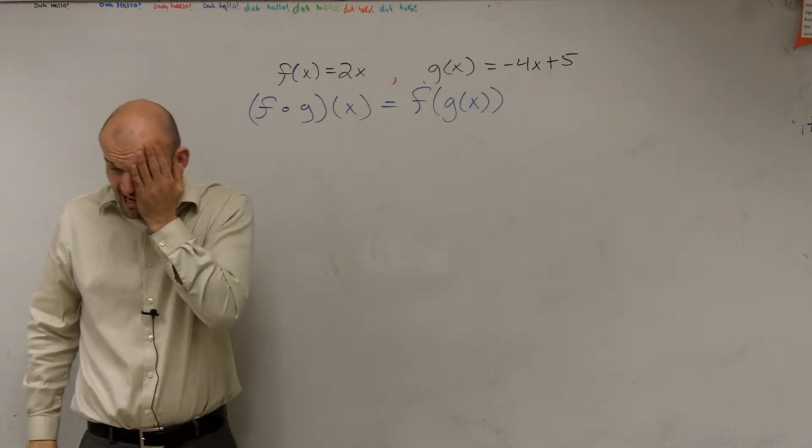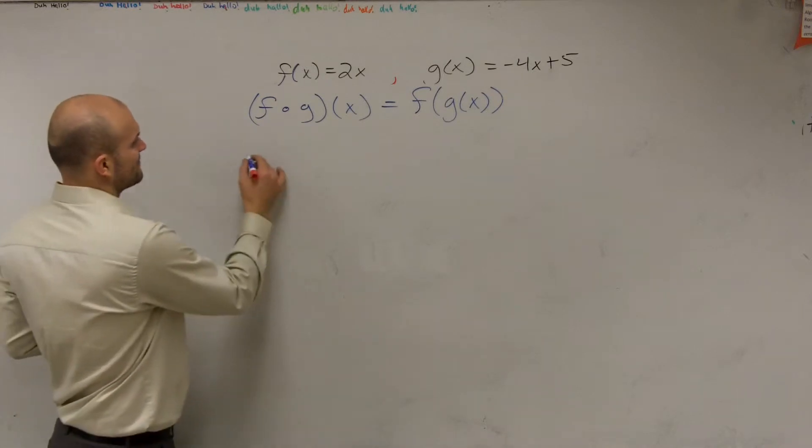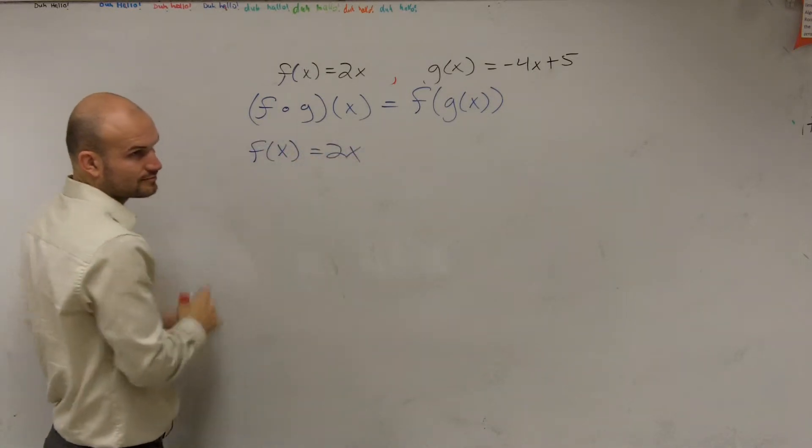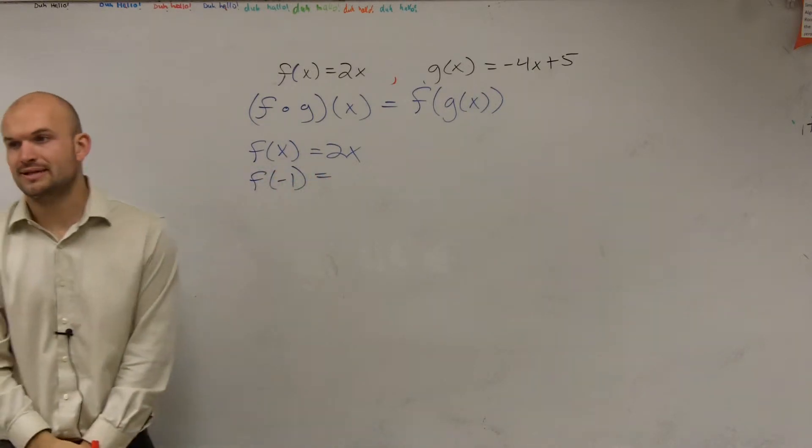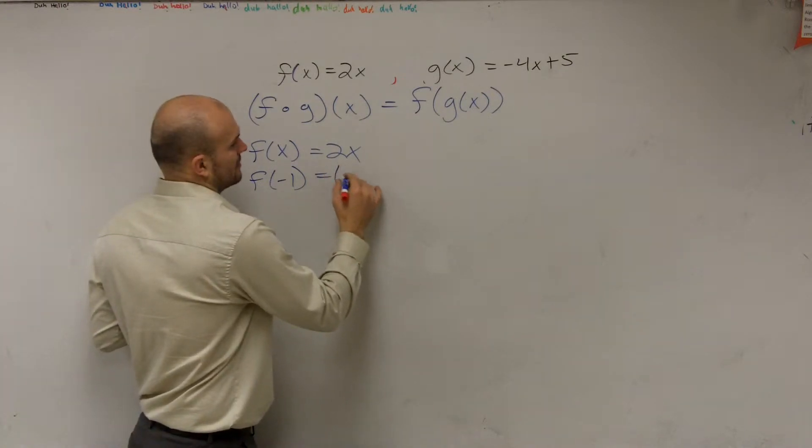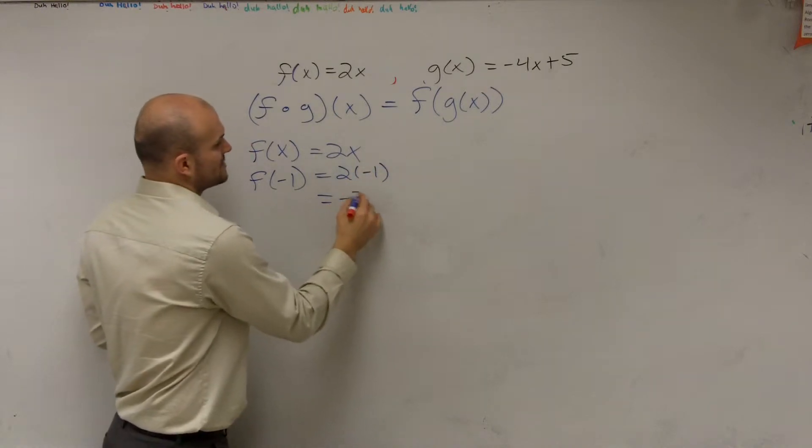Let's backtrack a little bit. So if I have f of x equals 2x, and I say f of negative 1, what do I do with the negative 1? Plug it in for x, right? You guys are pretty good at that. So that equals negative 2.